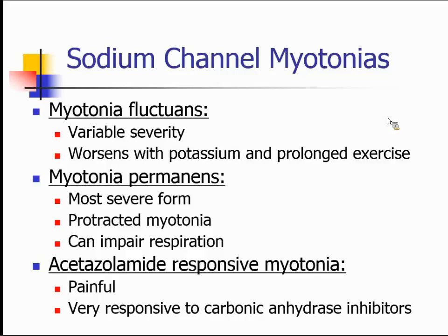There are three subtypes of the sodium channel myotonias. Myotonia fluctuans, as the name suggests, is the most variable in its presentation and most exquisitely sensitive to potassium ingestion and prolonged exercise. Myotonia permanens is the most severe form — patients continue to have myotonia even at rest, and it can affect the diaphragm causing transient respiratory dysfunction. Acetazolamide-responsive myotonia is an extremely painful form most sensitive to carbonic anhydrase inhibitors, particularly acetazolamide, though the other forms can also respond to a lesser extent.